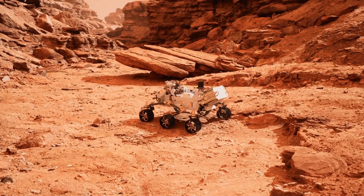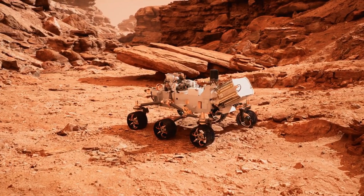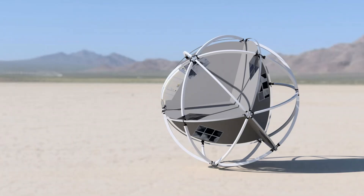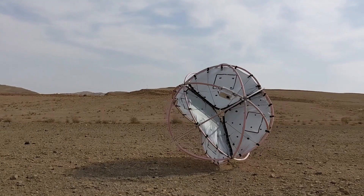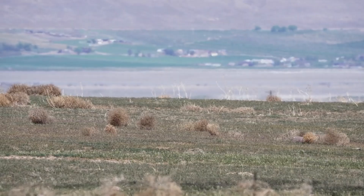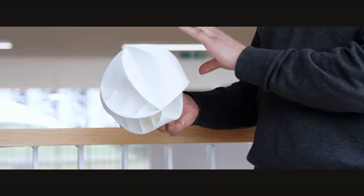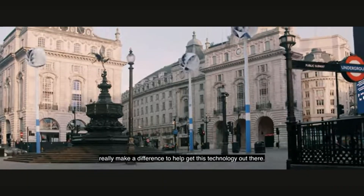Interestingly, the origin of the O-Wind Turbine traces back to a very different context. During the 2010s, NASA considered the use of tumbleweed rovers that could roll across Martian surfaces driven by wind. One of the O-Wind Turbine's co-founders built upon this idea, designing a system that could move even with crosswinds — developing a wind-driven object that could shift direction perpendicular to the prevailing wind. This lightweight, efficient concept was later adapted to meet the needs of urban energy generation.